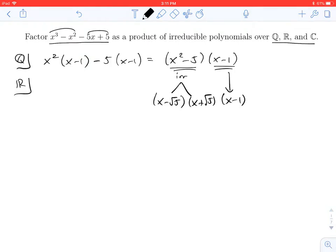Okay, so these are all linear, so they're absolutely irreducible now. If we go to the complex numbers, well, there's nothing more to do. I already have irreducible polynomials.